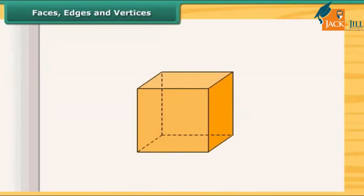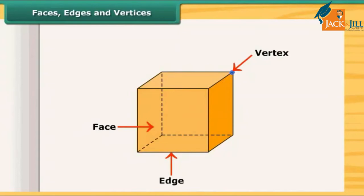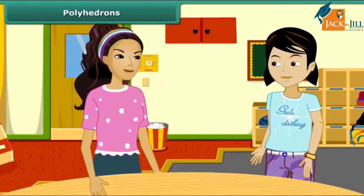Look at this cube. This is the face of a cube. This is the edge of the cube. And this is the vertex of the cube. An edge is a line segment where the faces meet. And the vertices are the points where the edges meet. Do you know what we call a solid having flat faces, edges, and vertices?